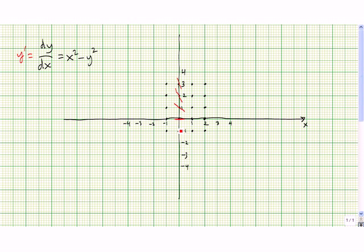Now let's go to the point (0,-1). Y prime is equal to 0 squared minus negative 1 squared, so that's equal to 0 minus positive 1, so that's equal to negative 1. So here at this point, we need to have a slope of negative 1 as well.